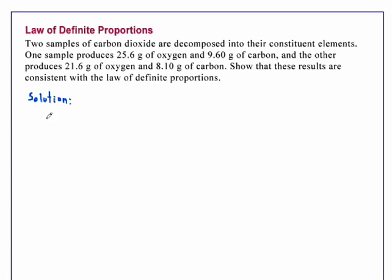We'll look at the two samples individually. For sample number one, the ratio of the mass of oxygen to the mass of carbon is equal to 25.6 grams divided by 9.60 grams.